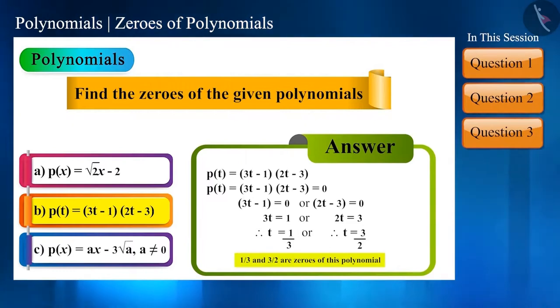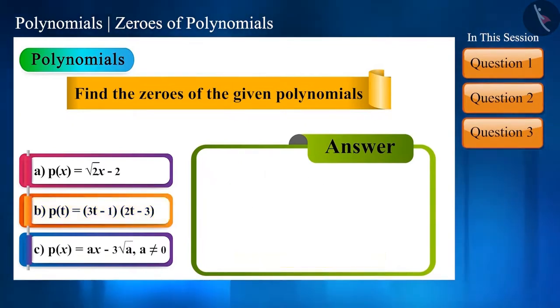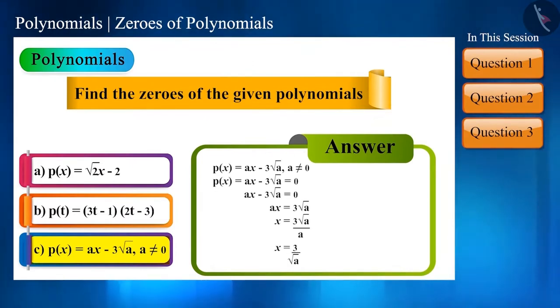Now let's go to the next polynomial: p of x is equal to a x minus 3 root a, where a is not equal to 0, which on solving we get 3 by root a. Zero of this polynomial is 3 by root a.